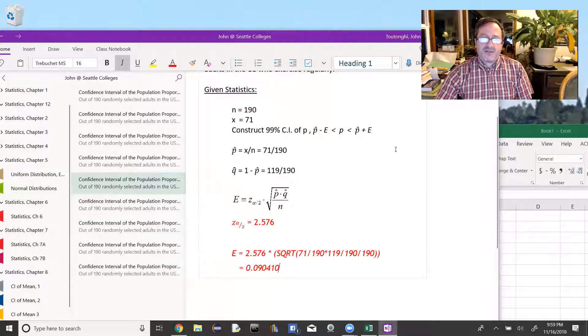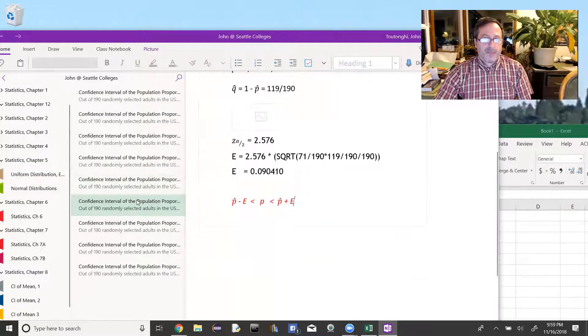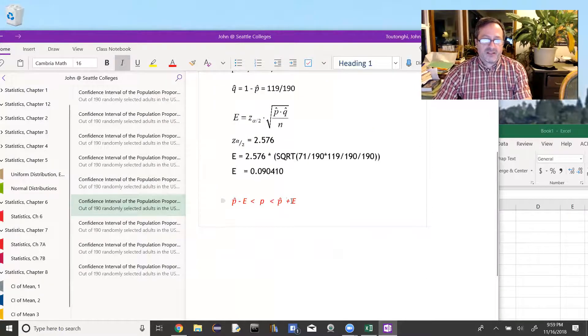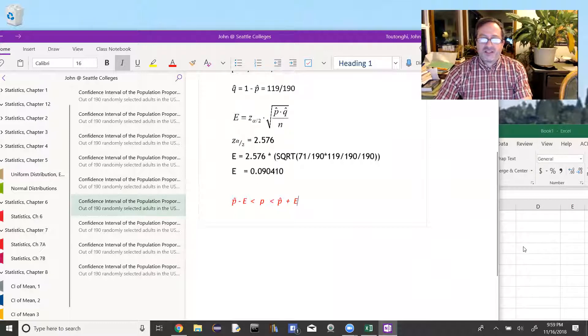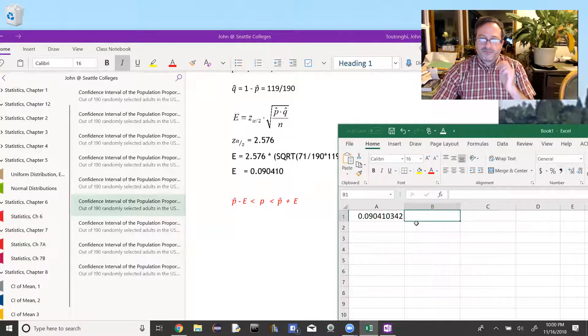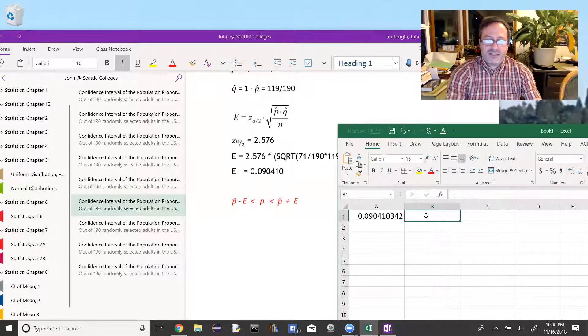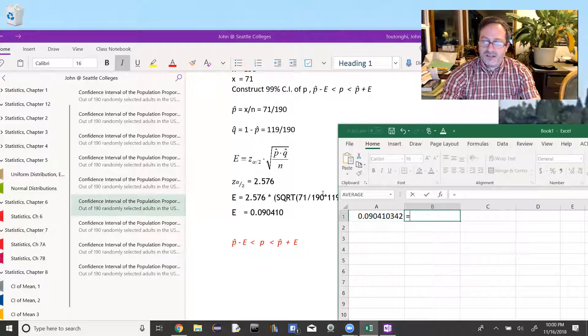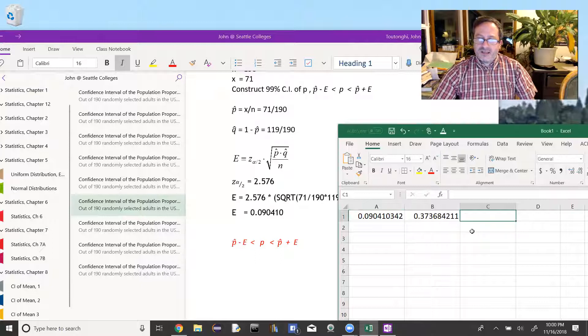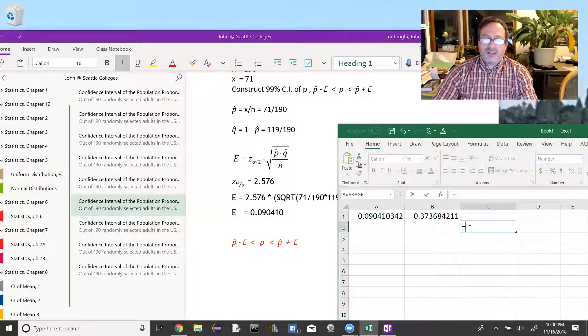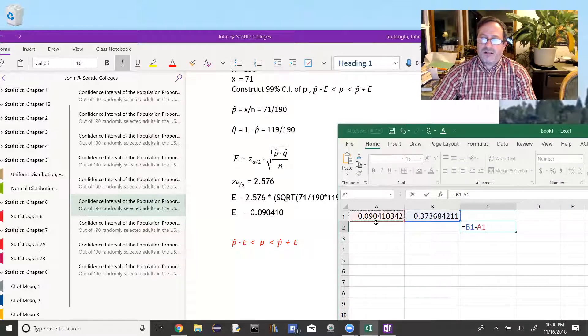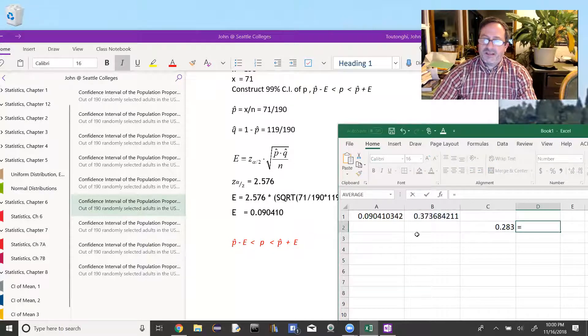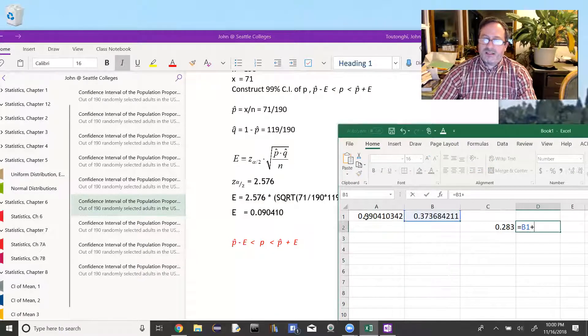Now I just need to take that error and add it and subtract it from p-hat up here to find the confidence interval. The confidence interval is going to go p-hat minus the error up to p-hat plus the error. I would suggest you do these computations in Excel. It helps you avoid rounding errors. In our cell one here, that's the error. In this cell, I'm going to put p-hat, so that's going to be 71 out of 190. Then for my confidence interval, the left side would be p-hat minus the error.